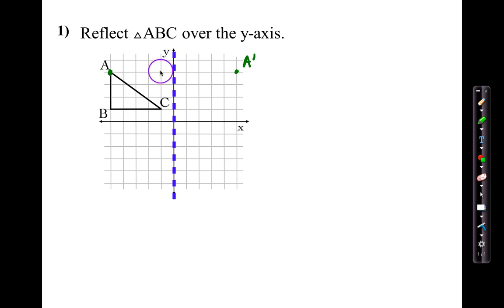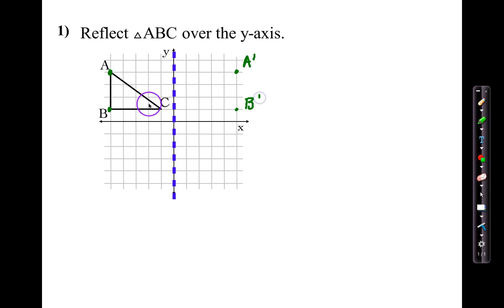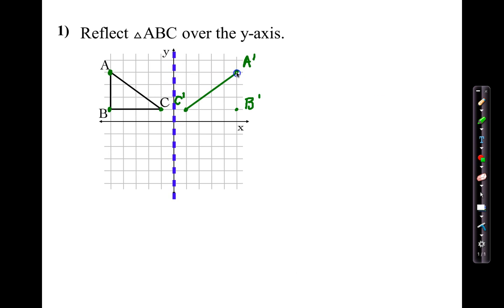Notice they're still on the same horizontal line. Now I'm going to repeat this process for each point. B — how far is it from the Y axis? It is 1, 2, 3, 4, 5 from the left. So I'm going to go in the opposite direction and go 5 to the right: 1, 2, 3, 4, 5. I'll call it B prime. Same idea with C — it is 1 to the left, so I'm going to go in the opposite direction and go 1 to the right and call it C prime. Once I have those labeled, all I'm going to do is connect these points together. And there you have it.